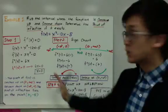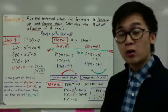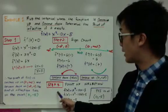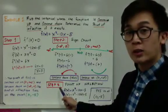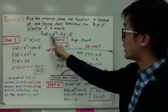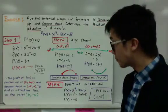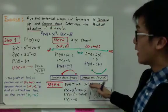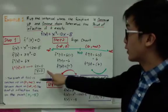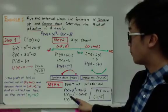Since the concavity is changing — I have concave down and concave up — the point of inflection exists because there are two different concavities. For step three, I need to find the particular point where the point of inflection lies. You use the original function, which is f of x equals x cubed minus 12x minus 5, and plug in the critical number from the second derivative to find the point of inflection.